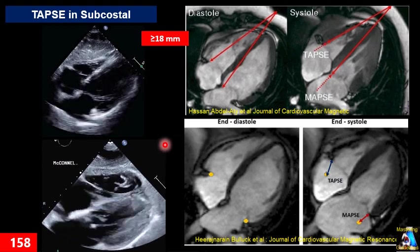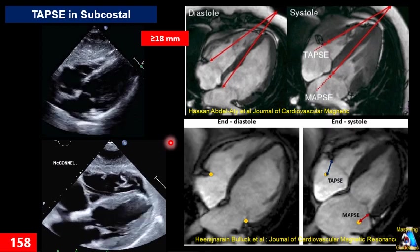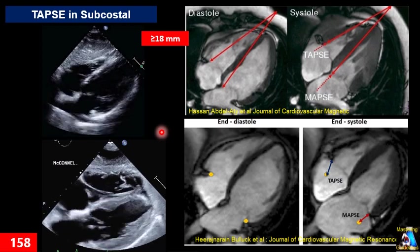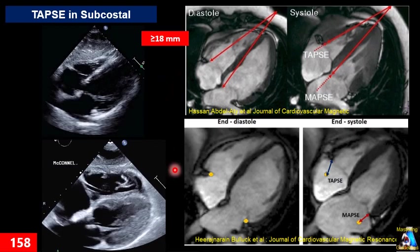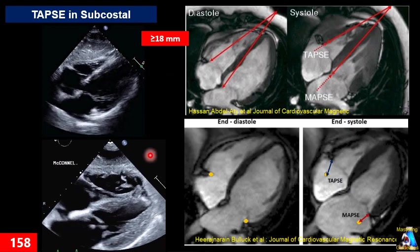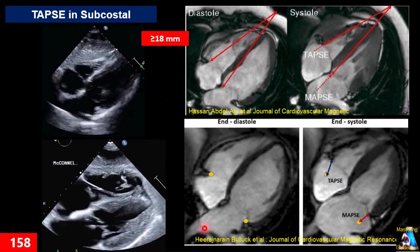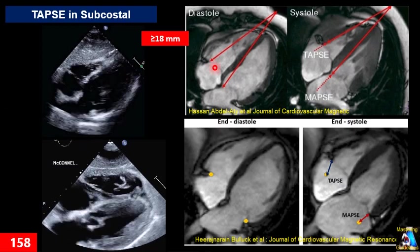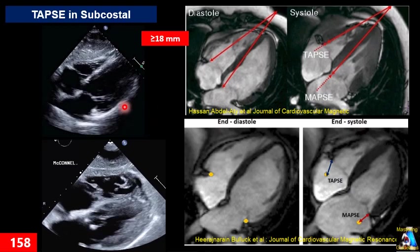The normal value for TAPSE is equal to or more than 18 mm. Some cutoffs used for specific indications such as prognosis and survival prediction are 16 mm or 17 mm. Remember to account for age differences — for example, in young athletes, a value above 20 mm may be questionable and you need to verify technique. Generally, equal to or more than 18 mm is the cutoff for normal TAPSE.